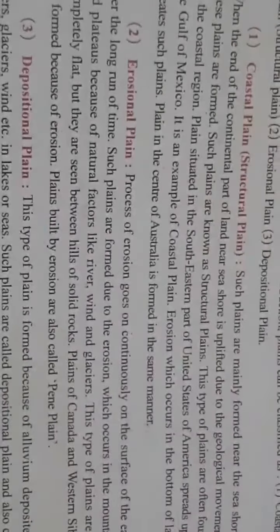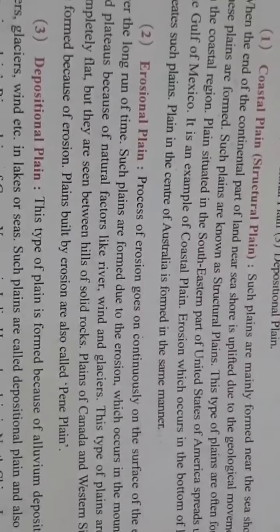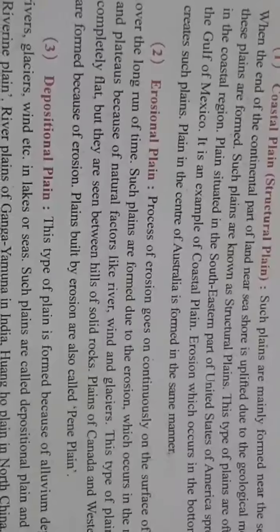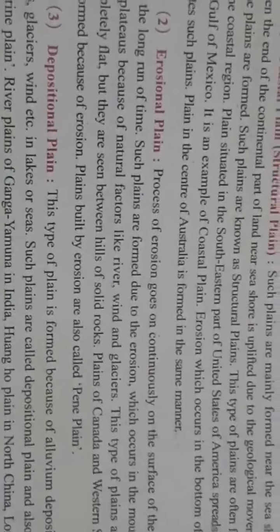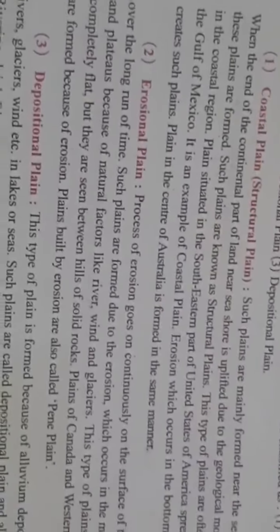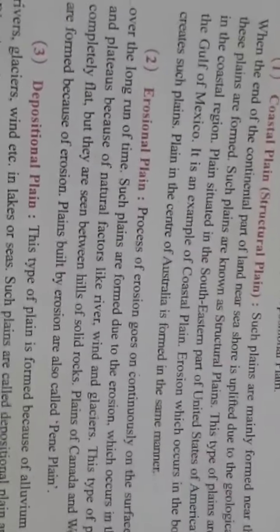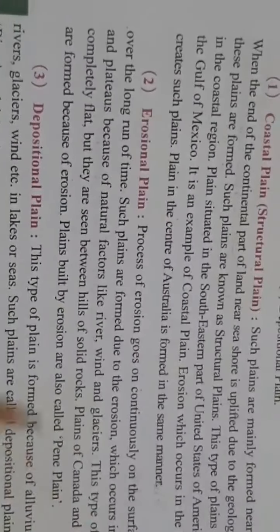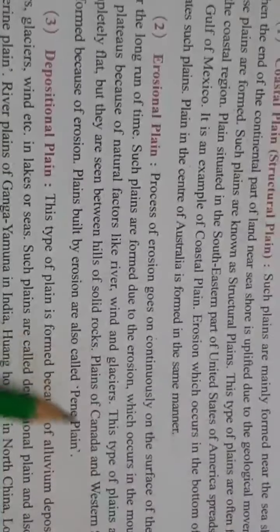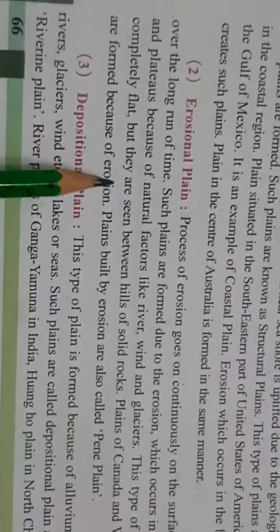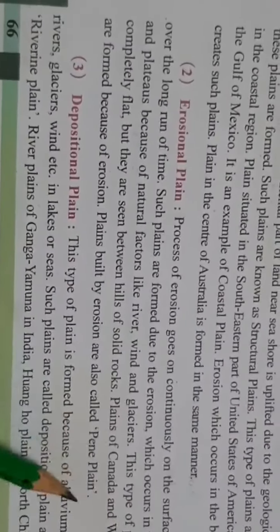Yani erosional plane — jho erosion continuously surface earth ke upar se hota hai, hawa se, baarish se, nadi se, ya glacier se — jho mitti nikal ke chali jaati hai aur kahi jake settle hoti hai. Is type ke planes ko erosional plane bola jaata hai. Aur ye completely flat nahi hote, but woh dho hills ke jo solid rock hai, uske bich wala area hota hai. Jaisa ki Canada ka plane, aur western Siberia ka, jo erosion ki wajah se bana hai. Aur iska doosra naam hai penny plane.